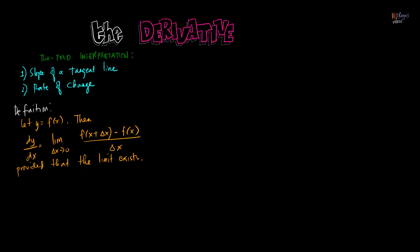If we have a function in general, y equals f of x, then the derivative of y with respect to x — dy over dx, read as the derivative of y with respect to x — is equal to the limit of f of x plus delta x minus f of x, all over delta x, as delta x approaches zero, provided that the limit exists.